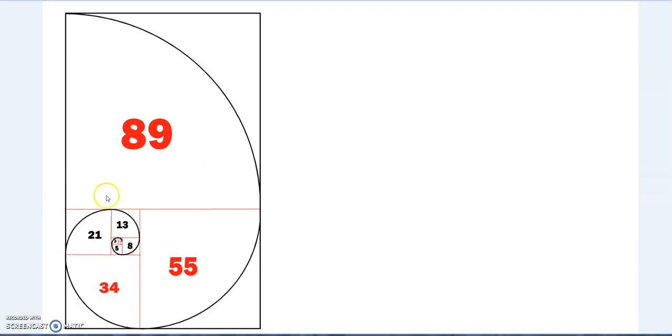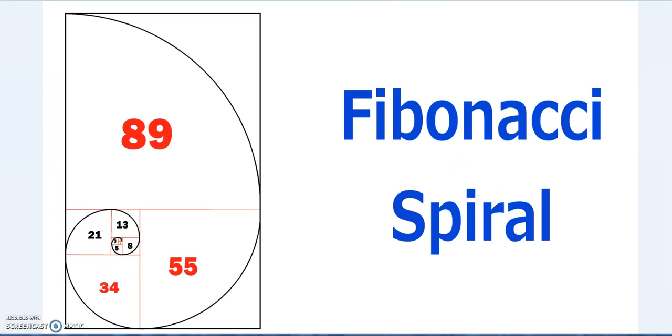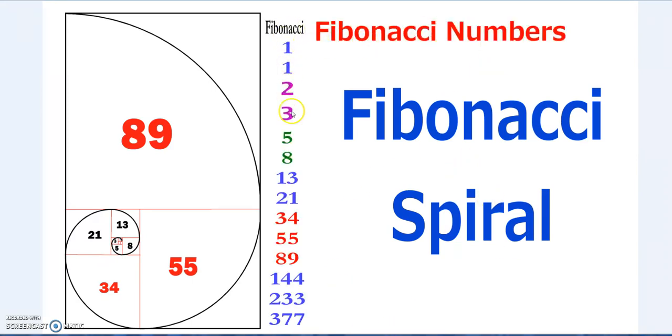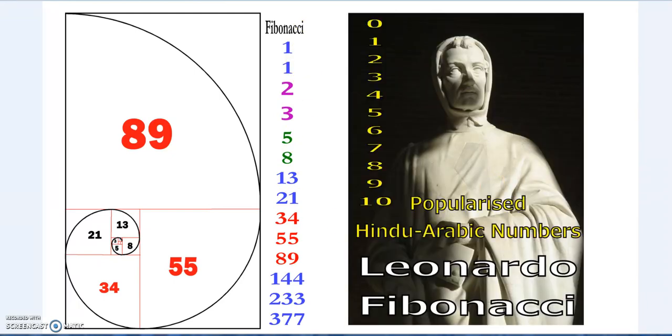But I'll put a link in the description to at least one really cool lecture regarding Phi and Fibonacci numbers, because it's very interesting. So we have the Fibonacci spiral, the Fibonacci numbers 1, 1, 2, 3, 5, 8, 13, 21, 34, 55, 89. The Fibonacci spiral and numbers are named after Leonardo Fibonacci, who also popularized the base 10 Hindu Arabic. He popularized them in the Western world.